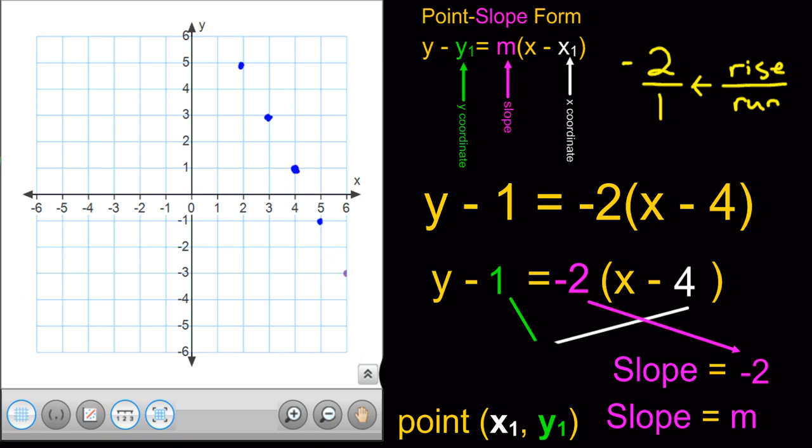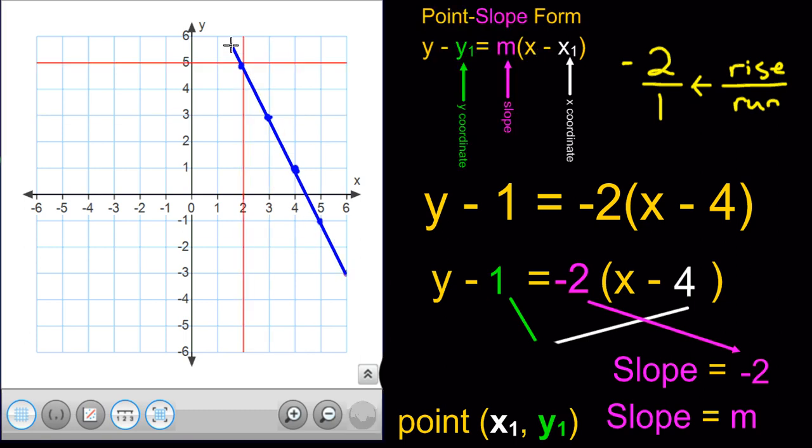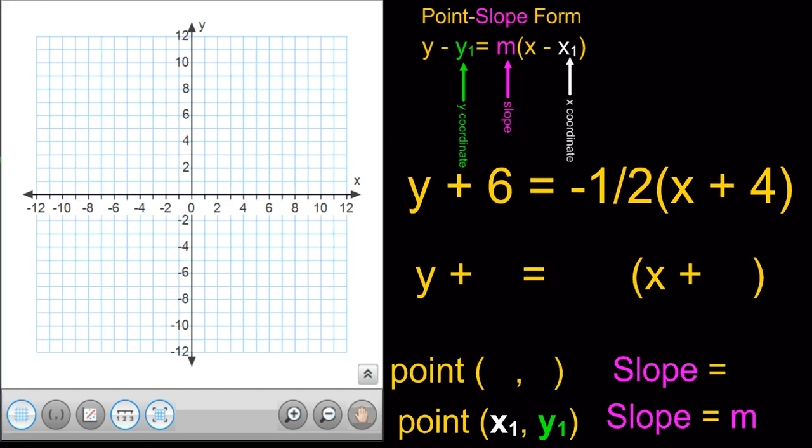And I can connect my dots, then, with a straight line. And add the little arrowheads to the end, and you just graphed off of point-slope form. Let's do one more.